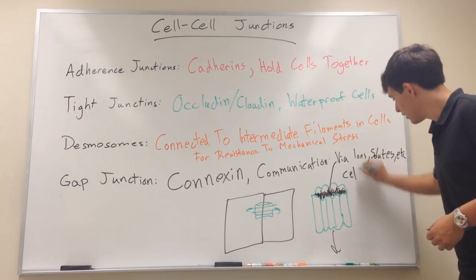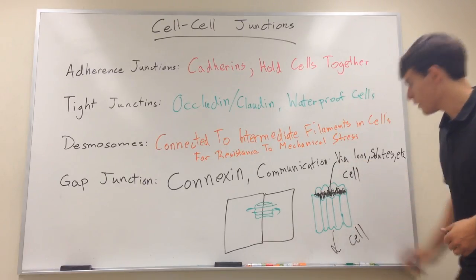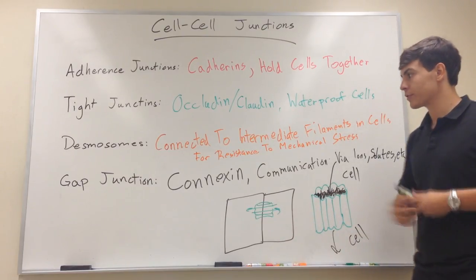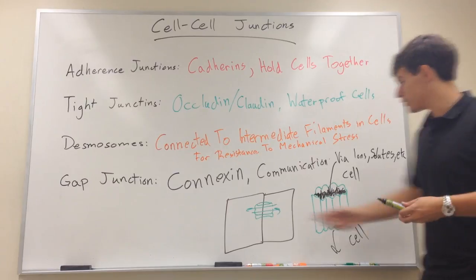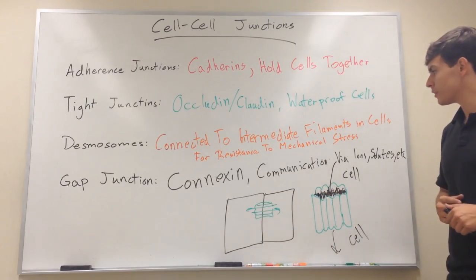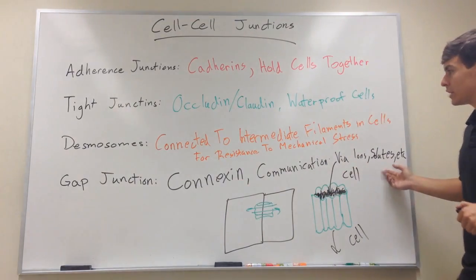This is very important in, like, cardiac muscles has a bunch of gap junctions for communicating very quickly, so you can send solutes and everything back and forth. So, gap junctions lend communication.